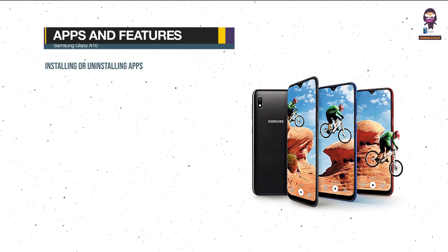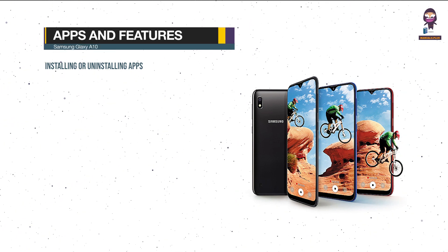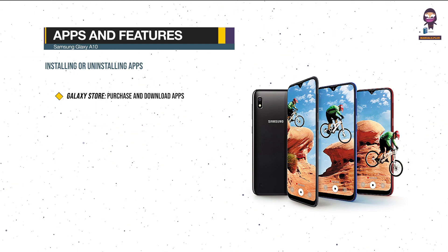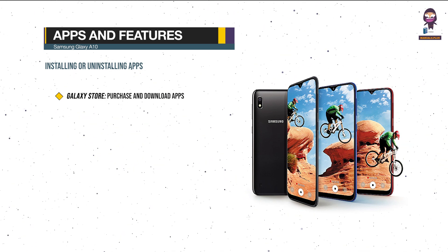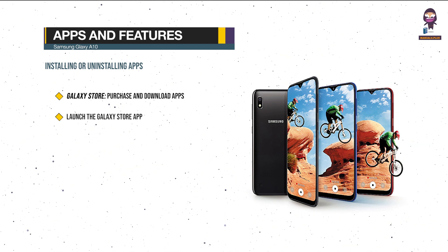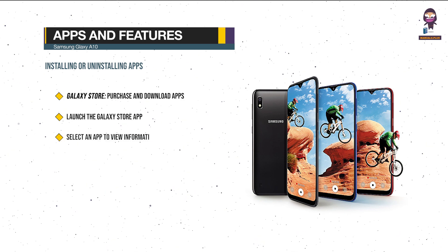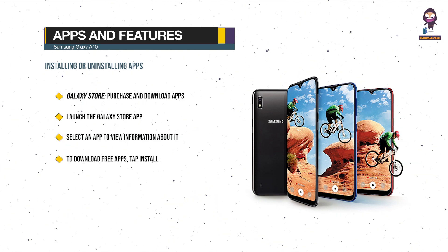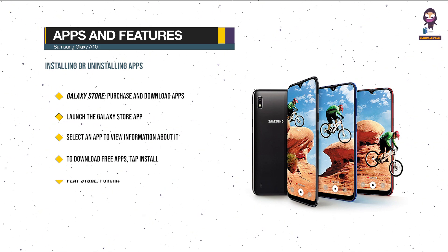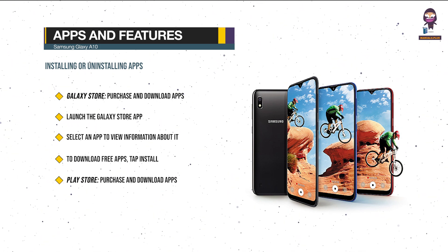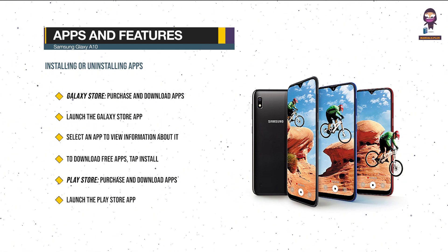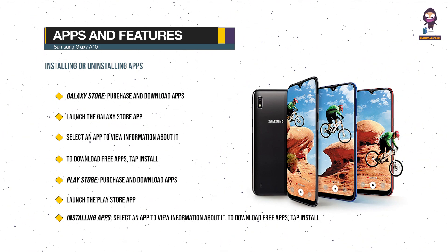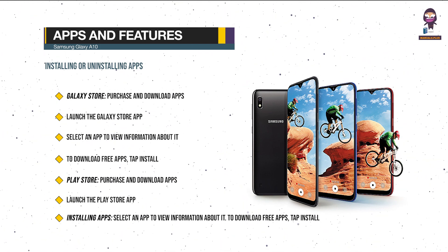Apps and Features — Installing or Uninstalling Apps. Galaxy Store: you can download apps that are specialized for Samsung Galaxy devices. Launch the Galaxy Store app, select an app to view information about it. To download free apps, tap Install. Play Store: launch the Play Store app, select an app to view information about it. To download free apps, tap Install.